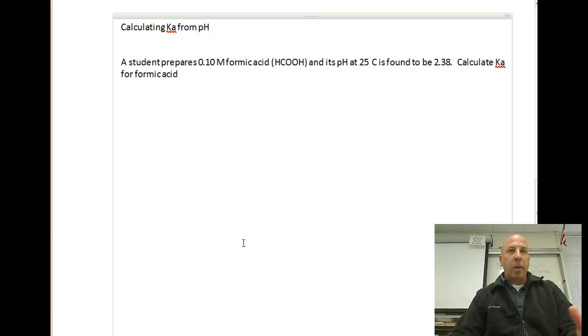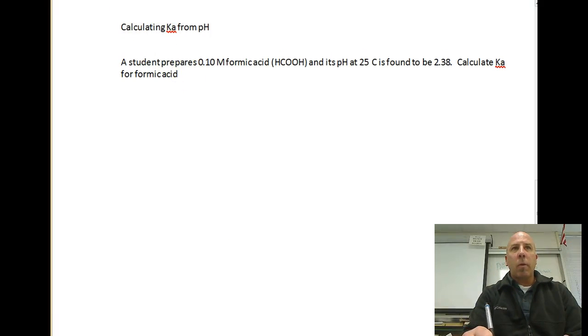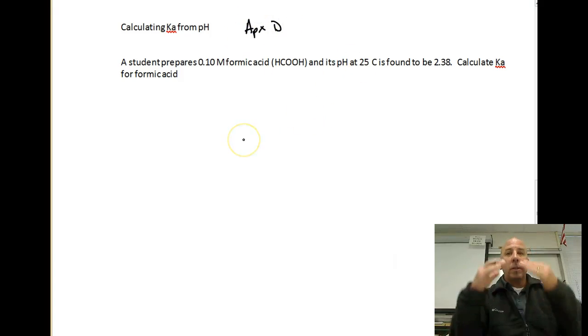The next thing we want to talk about is the ability to calculate Ka from pH. Now, sometimes if we don't know a Ka for an acid, what we can do is we can just look it up. In our book, in Appendix D in the back of the book, there's a list of all types of Ka's, but they're not always given to us in problems. So, sometimes we have to calculate Ka's, and this is what's going to happen here.